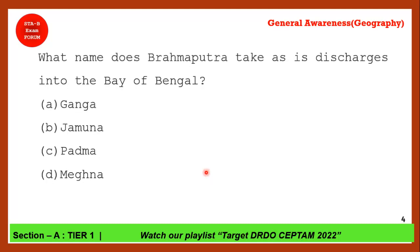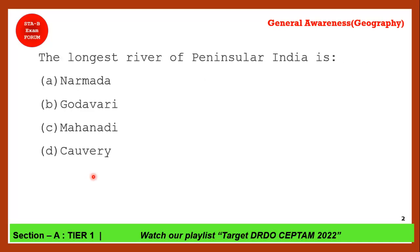Next question: What name does Brahmaputra take as it discharges into the Bay of Bengal? The correct answer is option D — Meghna. When Brahmaputra enters Bangladesh it is called Jamuna. When Padma and Jamuna merge in Bangladesh, the combined river is known as Meghna, which then flows into the Bay of Bengal.